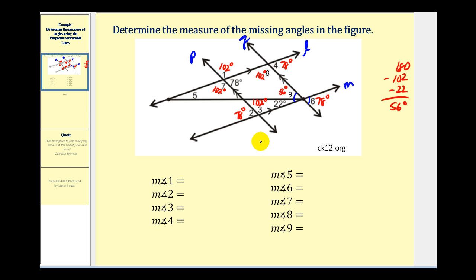We have everything except angle five. One way to determine the measure of angle five is to look at the triangle formed here. The sum of the interior angles of a triangle equals one hundred eighty degrees. This angle is one hundred two degrees and this angle is fifty-six degrees, for a total of one hundred fifty-eight degrees. So one hundred eighty minus one hundred fifty-eight leaves us with twenty-two degrees for angle five.